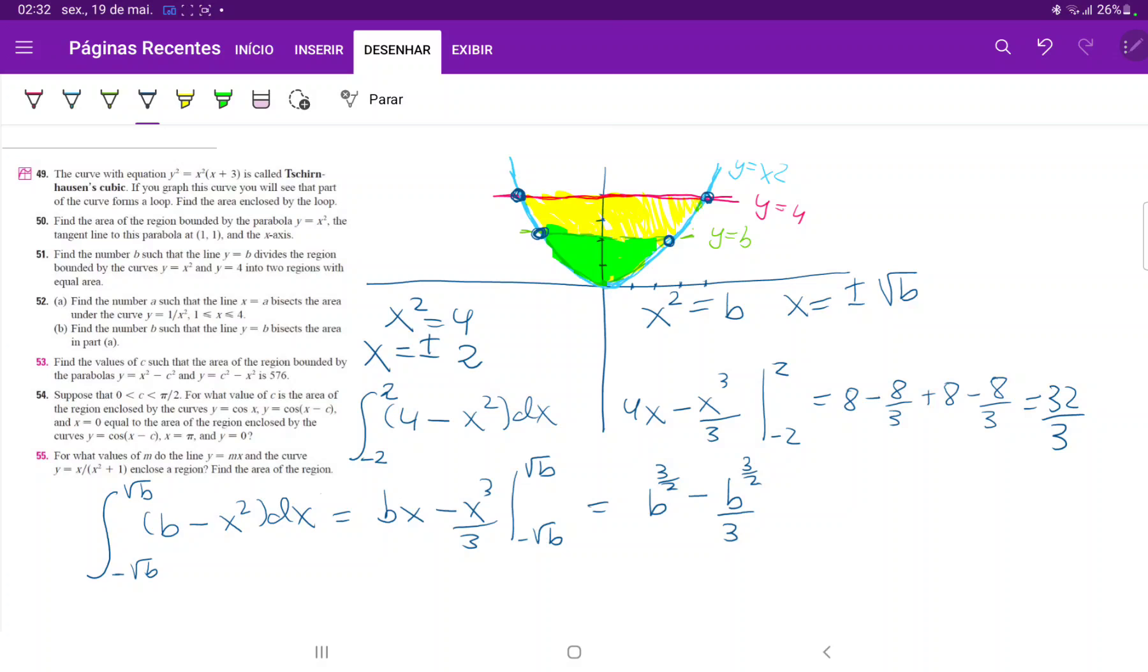So minus minus is plus b to the 3 halves, and then minus minus minus is minus b to the 3 halves over 3. Then we're taking all of this and we're setting it equal to 32 over 3 divided by 2, because it's half, so we're setting this equal to 32 over 6.